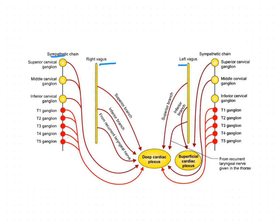The parasympathetic nerves reach the heart via the vagus nerve. The vagus nerve is cardio-inhibitory — on stimulation of this vagus nerve, the heart rate is slowed down. So the parasympathetic nerves are cardio-inhibitory; on stimulation they slow down the heart rate.